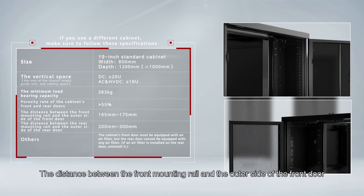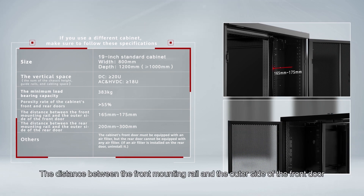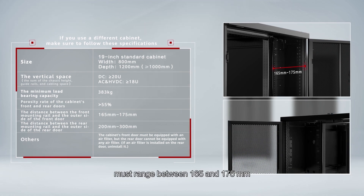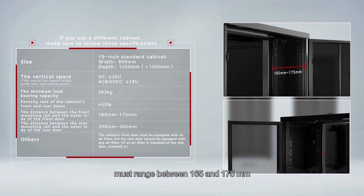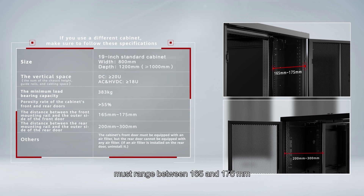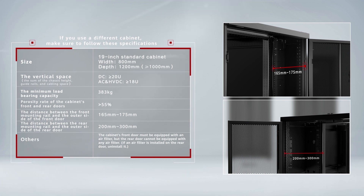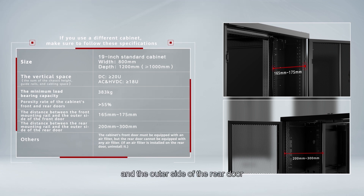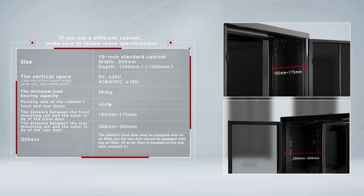The distance between the front mounting rail and the outer side of the front door must range between 165 and 175 millimeters. The distance between the rear mounting rail and the outer side of the rear door must range between 200 and 300 millimeters.